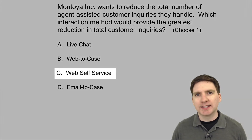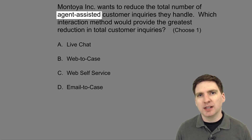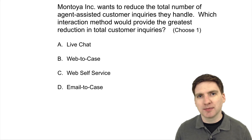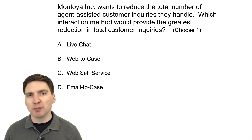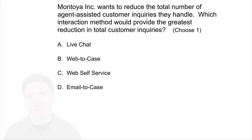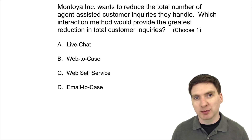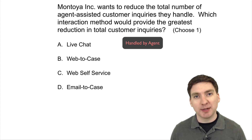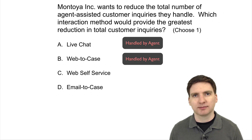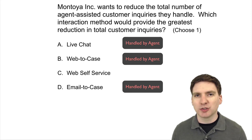The correct answer is C, web self-service. The key word in this question is 'agent assisted.' If they want to reduce their number of agent-assisted inquiries, the best way is to remove the need for the agent. Web self-service means a customer finds their own answers through a web portal or community without agent intervention. Live chat requires an agent communicating in real time. Web to case requires a case to be routed to a person. And email to case also requires someone to respond — so all three still require agent intervention.